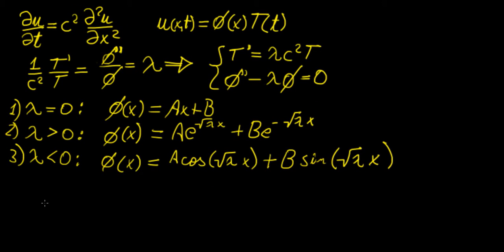In the last video we talked about how to solve the heat equation using separation of variables. What we ended up doing was assuming a solution that is a product of two functions, each one a function of a single variable. We did the separation of variables and set both equations equal to some constant that we call the eigenvalue lambda, essentially reducing this partial differential equation into a system of two ordinary differential equations.